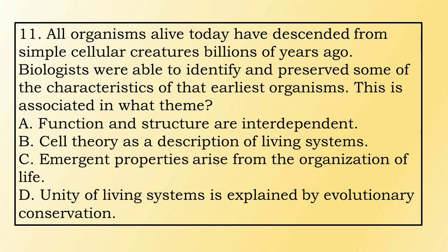Number 11. All organisms alive today have descended from simple cellular creatures billions of years ago. Biologists were able to identify and preserve some of the characteristics of the earliest organisms. This is associated in what theme? A. Function and structure are interdependent. B. Cell theory as a description of living systems. C. Emergent properties arise from the organization of life. D. Unity of living systems is explained by evolutionary conservation.